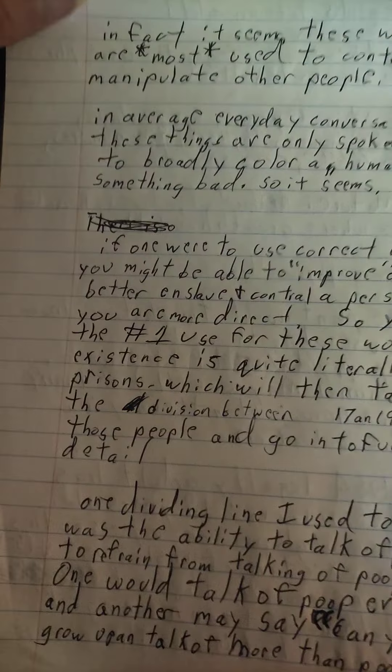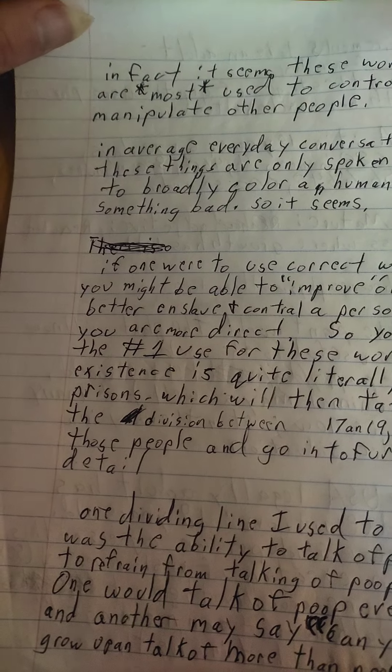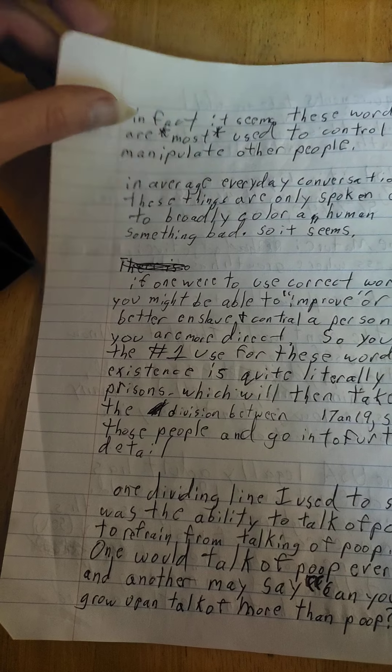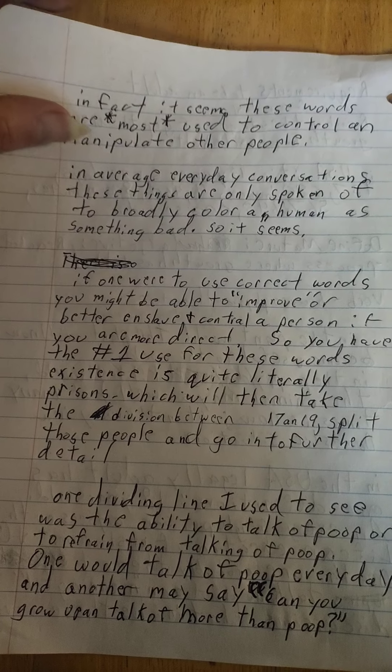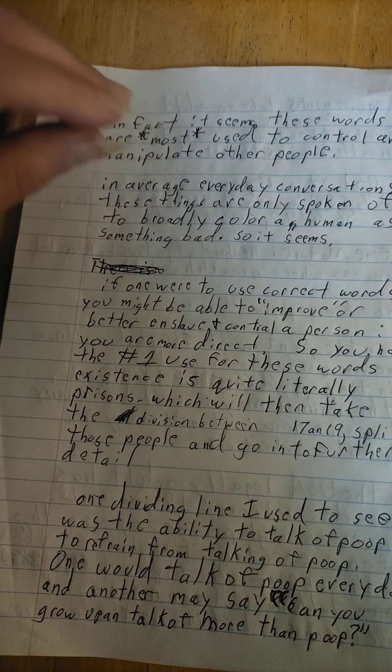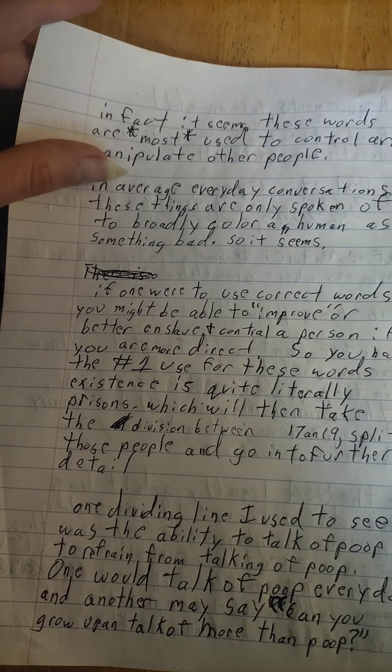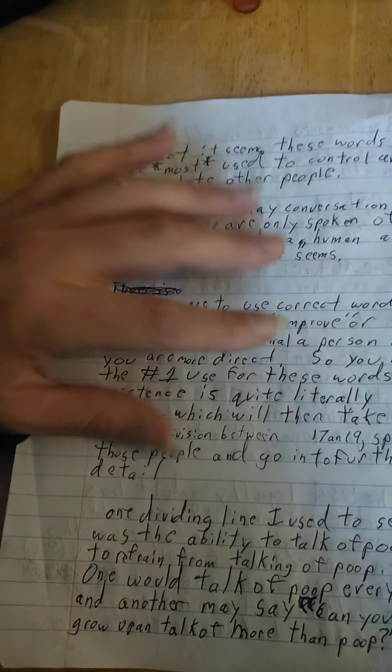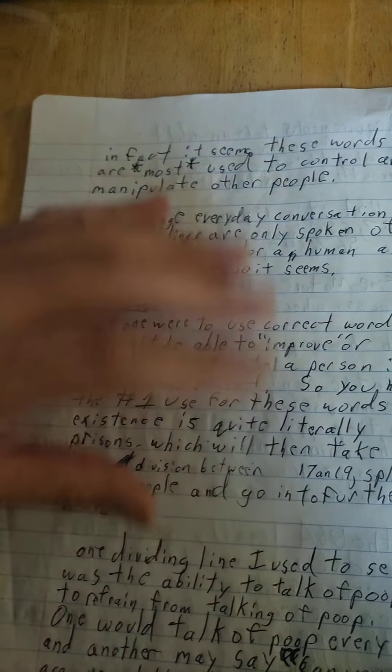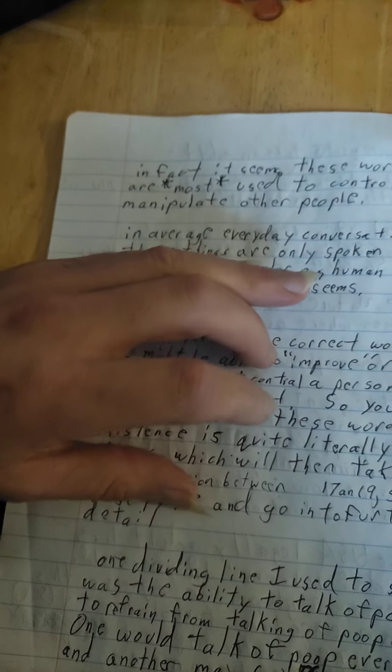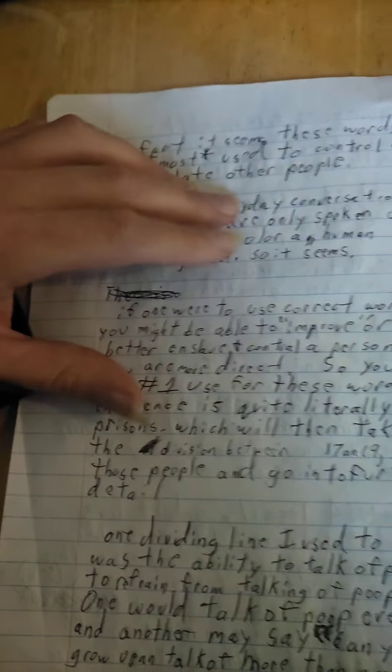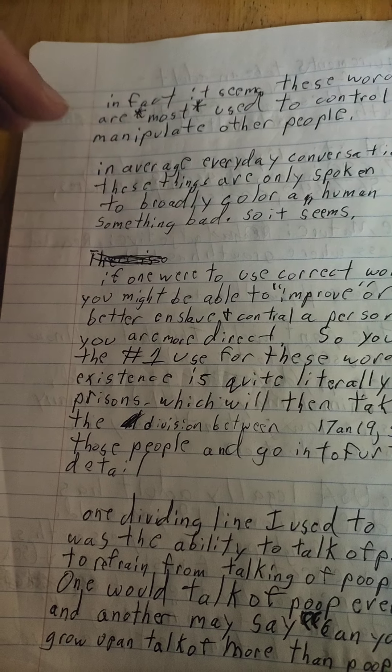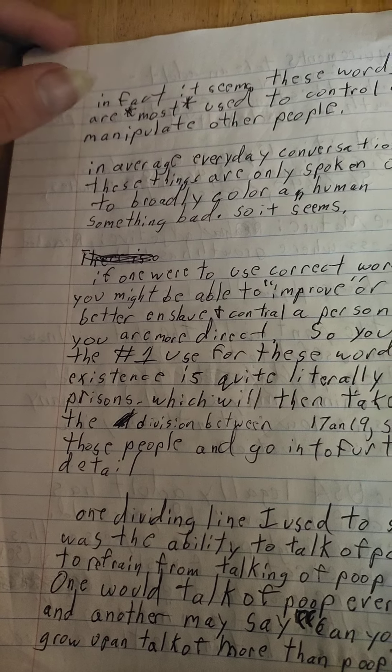In average everyday conversation, these things are only spoken of to broadly color a human as something bad, it seems to me. Generally we're not bringing up the word adult unless we're trying to discuss someone who's not acting like one. If one were to use correct words, you might be able to better control a person if you are more direct. So the use of words like adult and child in a portion of its actual usage amongst normal everyday people is linked to the stuff I've been talking about, and it's used to tell a child to shut up.